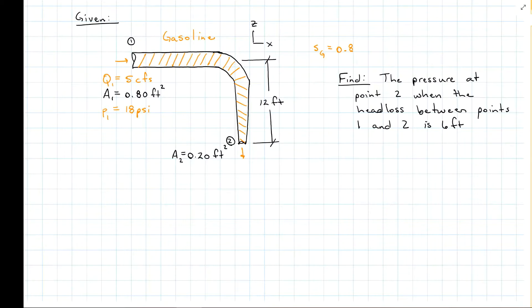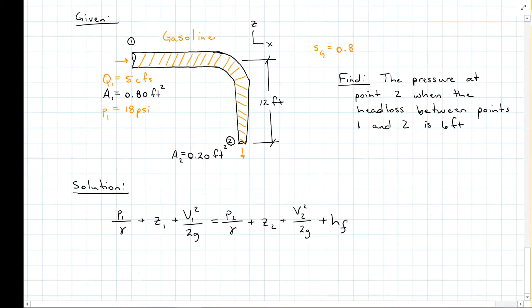Let's look at a bend in a gasoline line with an incoming flow rate of 5 cubic feet per second, a cross-sectional area of 0.8 feet squared, and an entrance pressure of 18 psi. Then we're going to go around the corner and drop 12 feet where we have a new cross-sectional area of 0.2 feet squared. We want to find the pressure at 0.2 if the head loss between points 1 and 2 is 6 feet. The specific gravity of gasoline is 0.8, and we're going to start with Bernoulli's equation. In order to have elevation Z, I need to set a datum. This time I'm going to put it at the bottom, but remember it doesn't matter where a datum starts.